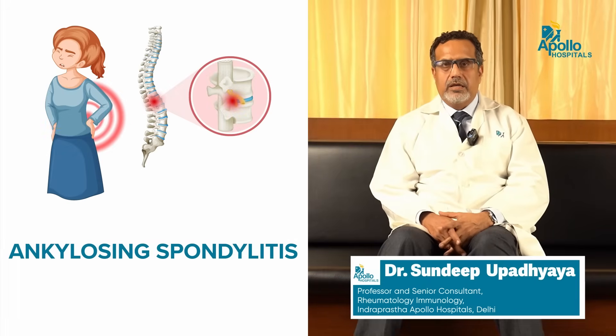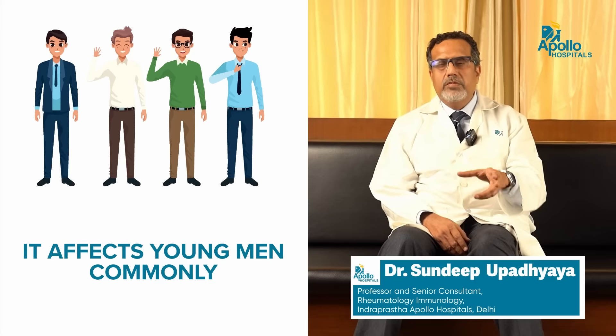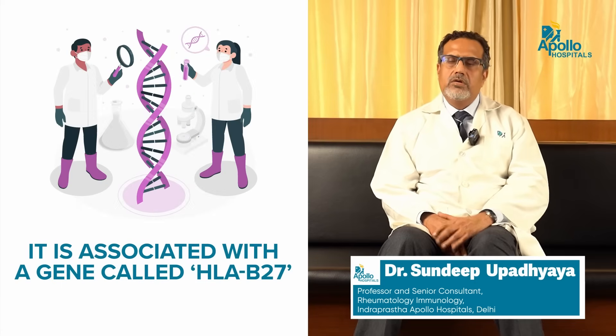Ankylosing Spondylitis is the scientific term for an arthritis of the spine. Spondylitis arthritis is a disease that affects young men very commonly and is very commonly associated with a gene called the HLA-B27. Some patients who develop this disease early on, or have very advanced forms after several years of its ravaging effects on the body, develop ankylosing spondylitis.